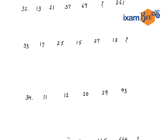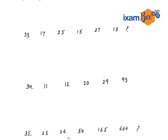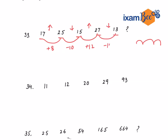Next question: 17, 25, 15, 27, 38. One difference here — first it is increasing, then decreasing, then increasing, then decreasing. So this may be an alternating series. We can see the differences: plus 8, minus 10, plus 12, minus 14. The pattern is plus, minus, plus, minus with numbers 8, 10, 12, 14. So next should be plus 16. 13 plus 16 would be 29. So 29 is your answer.